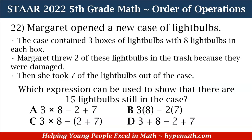Let's dive into question 22. Margaret opened a new case of light bulbs. The case contained three boxes of light bulbs with eight light bulbs in each box. Margaret threw two of the light bulbs in the trash because they were damaged, then she took seven of the light bulbs out of the case. Which expression can be used to show that there are 15 light bulbs still in the case? Is it A: 3×8−2+7, B: 3×8−2×7, C: 3×8−(2+7), or D: 3+8−2+7?